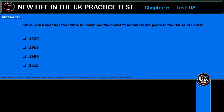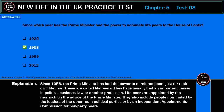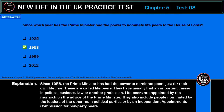Since which year has the Prime Minister had the power to nominate life peers to the House of Lords? 1925, 1958, 1999, or 2012? Correct answer: 1958. Explanation: Since 1958, the Prime Minister has had the power to nominate peers just for their own lifetime. These are called life peers. They have usually had an important career in politics, business, law, or another profession. Life peers are appointed by the monarch on the advice of the Prime Minister, and also include people nominated by the leaders of other main political parties or by an independent appointments commission for non-party peers.